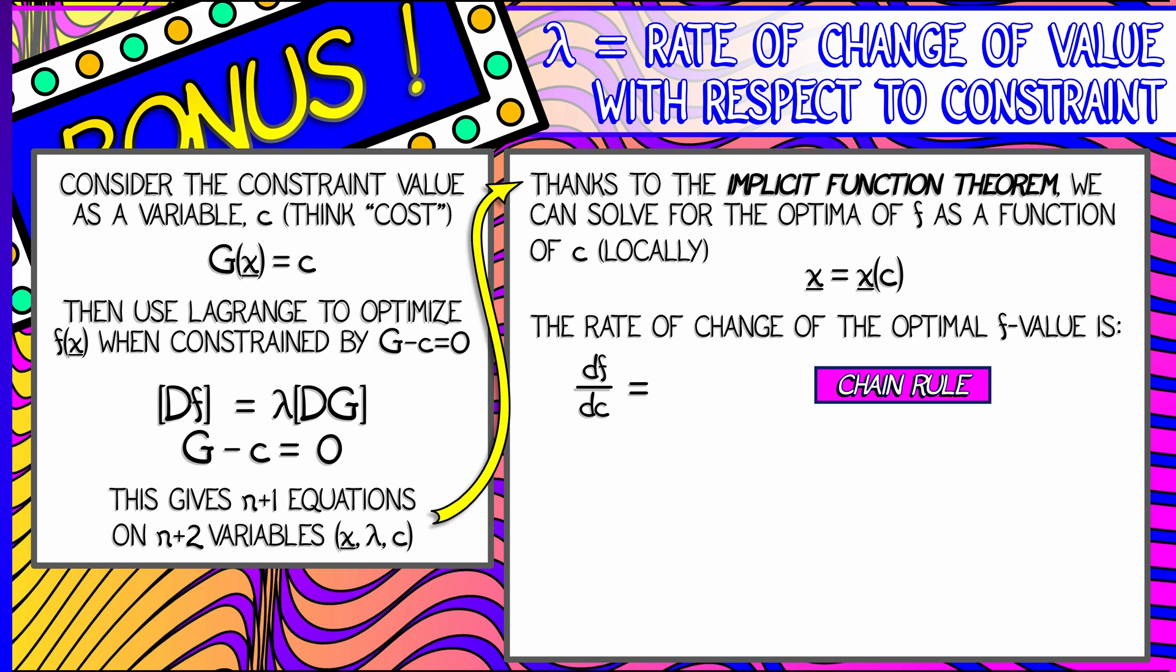It's an ordinary derivative. Using the chain rule, this is the partial of f with respect to the x variables times the derivative of the x variables with respect to the c variable. Ordinary derivative on the right, since x depends on just one variable, c.